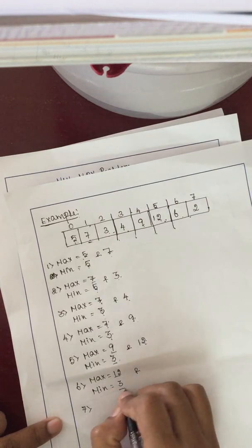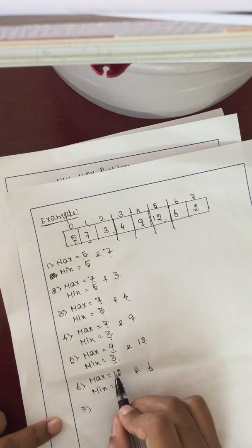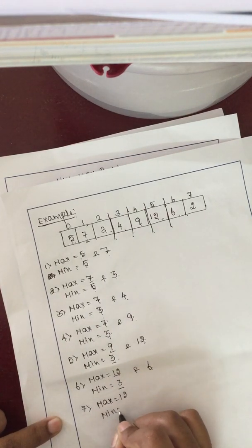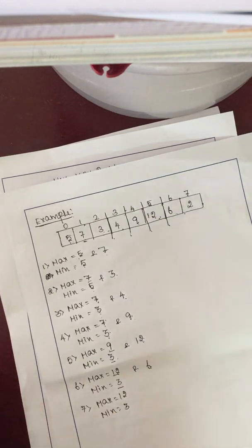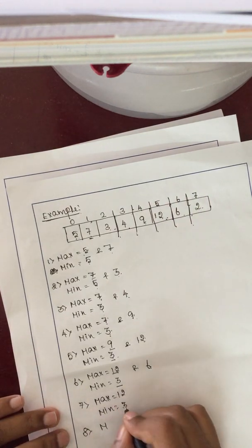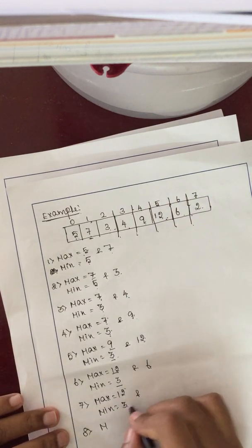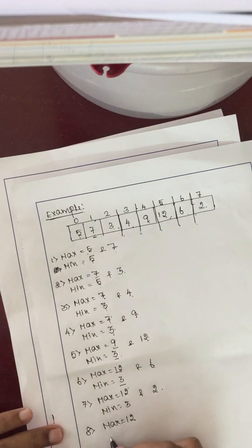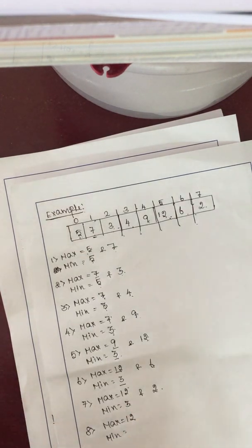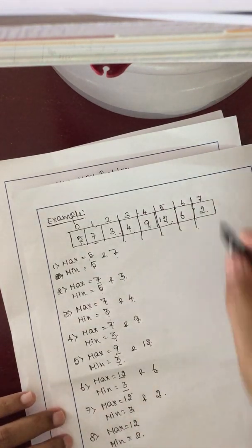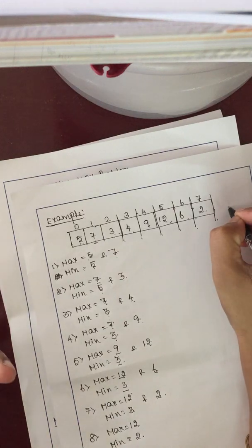The next element is 6. Current max is 12, current min is 3. Comparing 6 and 12: 12 is the maximum, so we write 12. Comparing 3 and 6: 3 is the minimum, so we retain 3. The next element is 2. Comparing 12 and 2: 12 is still the maximum. Comparing 3 and 2: 2 is the minimum, so the minimum value becomes 2, replacing 3.